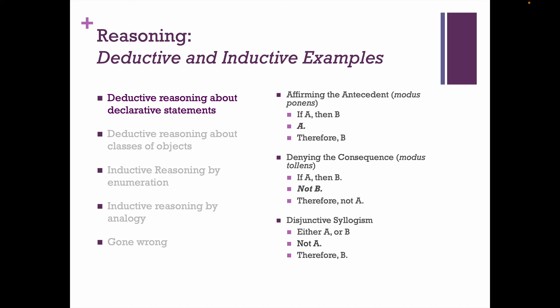Another way is to deny the consequence, known as modus tollens. Here's how it works: 'If A, then B' — that's your sentence with the antecedent and the consequence. In this case, the consequence is B. We are going to deny that consequence: Not B. So 'If A, then B; not B; therefore, not A.' The conclusion has to be that — if you're going to deny the consequence, the conclusion has to be not A.